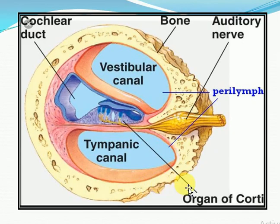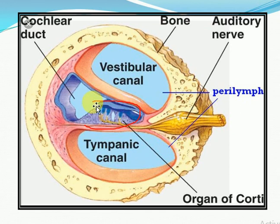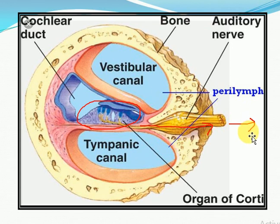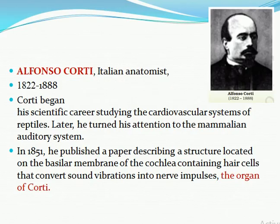This is the cochlea — the ear part. In the cross-section of the cochlea, the basilar membrane is visible. On the basilar membrane there is an organ that converts sound vibrations into nerve impulses, and that organ is called the organ of Corti.